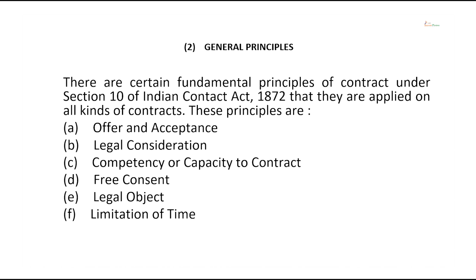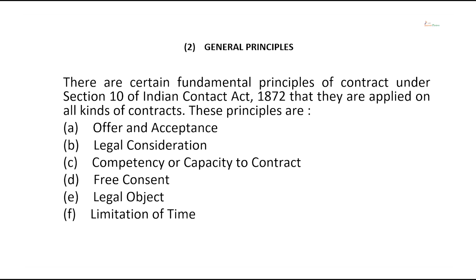The next type of principles are the general principles. There are certain general or fundamental principles of contract under Section 10 of the Indian Contract Act that are applied to all kinds of contracts. These general principles for the formation of any kind of contract — whether life insurance, general insurance, or reinsurance — are: offer and acceptance, legal consideration, competency or capacity to contract, free consent, legal object, and limitation of time.